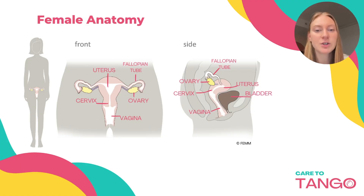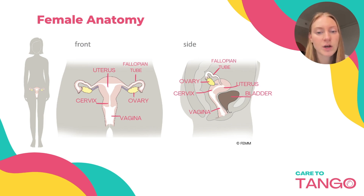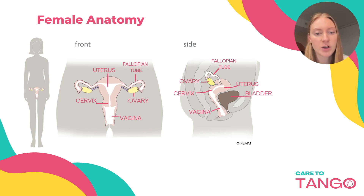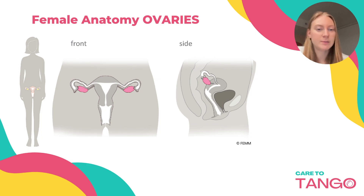I'm sure you've seen these images in a textbook or during your health class. We have everything labeled here. There's the vagina which leads to your cervix, that leads to your uterus, and then it leads to your fallopian tube and your ovary. You do have two fallopian tubes and two ovaries. On the image on the right you can see a side profile to get a better idea of where everything is. Now we're going to do more of a deep dive on each of these organs.